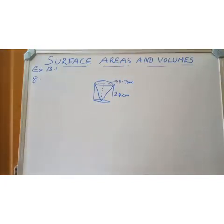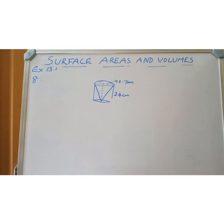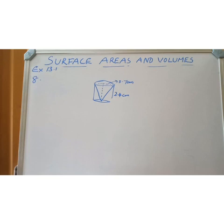Look at question number 8. From a solid cylinder whose height is 2.4 cm and diameter is 1.4 cm, a conical cavity of the same height and same diameter is hollowed out. Find the total surface area of the remaining solid to the nearest cm².